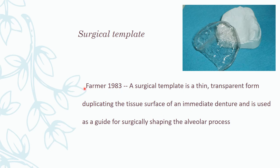Surgical templates are also made. According to Farmer (1983), a surgical template is a thin transparent form duplicating the tissue surface of an immediate denture, used as a guide for surgically shaping the alveolar process. It can be used to shape the edentulous ridge, since we are creating concavity throughout by making the denture cast edentulous.